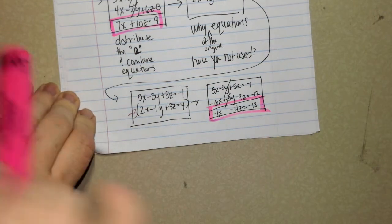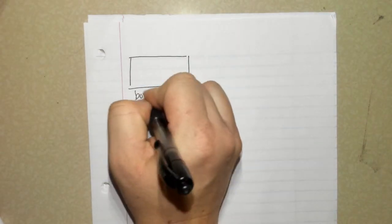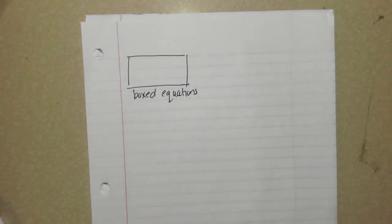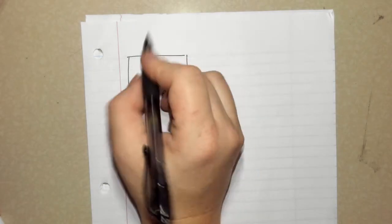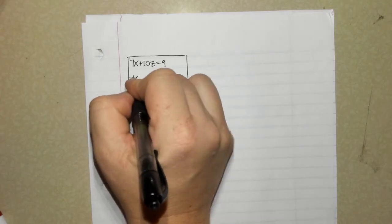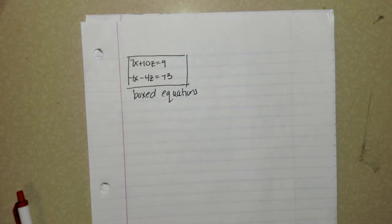So I'm going to go on to my next page. And I'm going to start by making a box. And underneath it, I'm going to write boxed equations. Please write down the two boxed equations you have. 7x plus 10z equals 19 and negative 1x minus 4z equals negative 13.